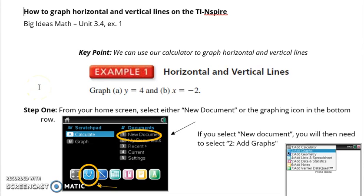Hi, welcome to a video on how to graph horizontal and vertical lines on the TI-Nspire. We're examining example 1 from chapter 3, section 4 of Big Ideas Algebra 1, where we want to graph y equals 4 and x equals negative 2.